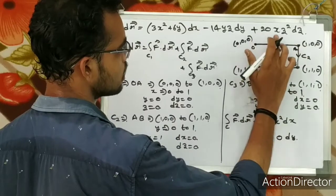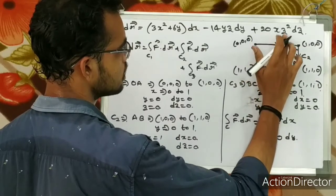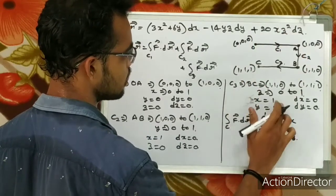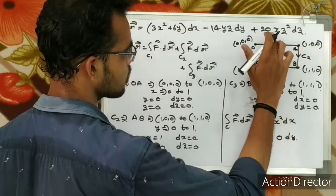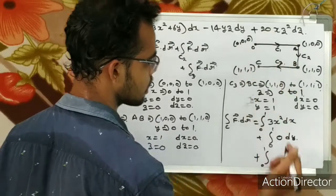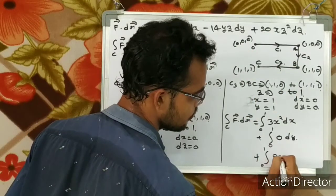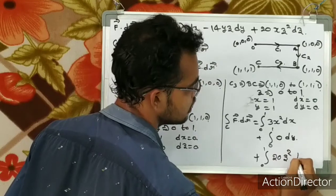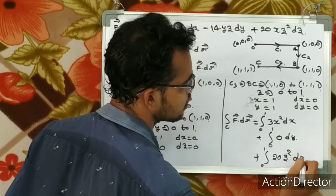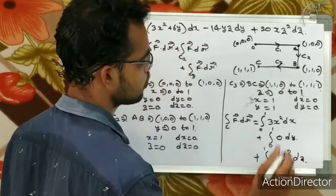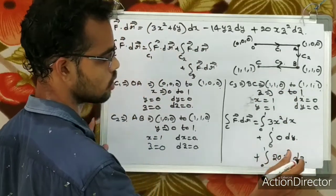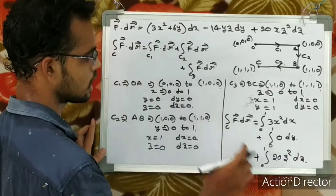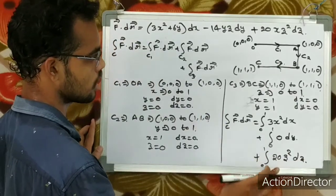For C3: only the 20xz squared dz term remains. With x equal to 1, this becomes the integral of 20z squared dz from 0 to 1.